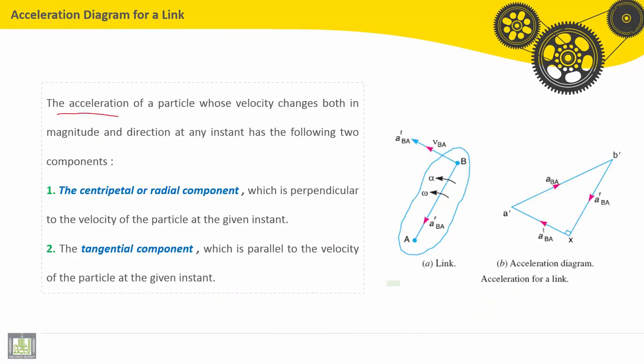The acceleration of a particle whose velocity changes both in magnitude and direction at any instant has the following two components. First one is called the centripetal or radial component, which is perpendicular to the velocity of the particle at the given instant. It is A^R_BA here.